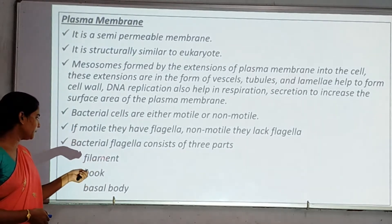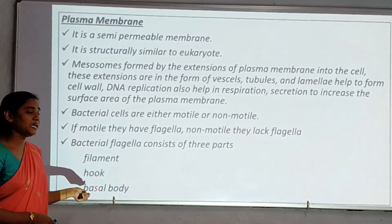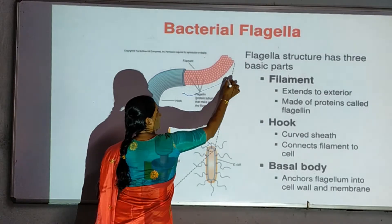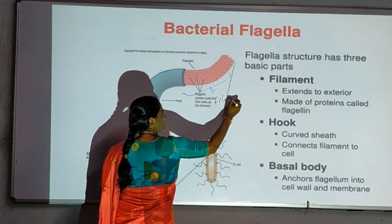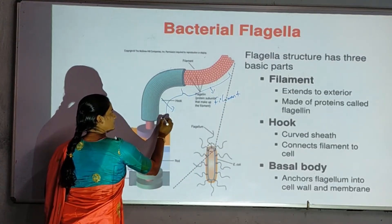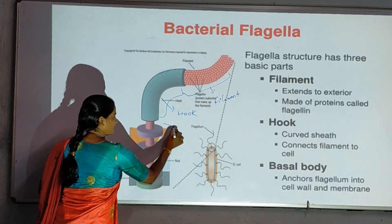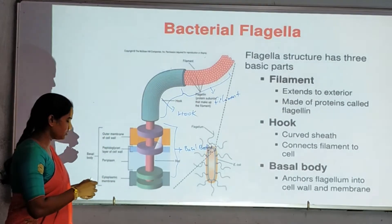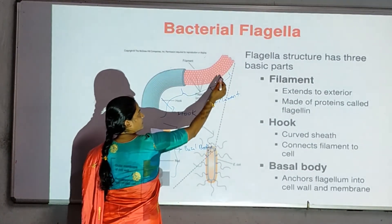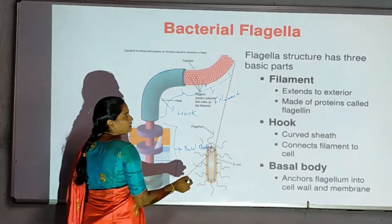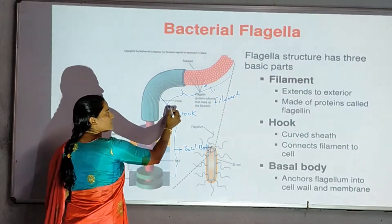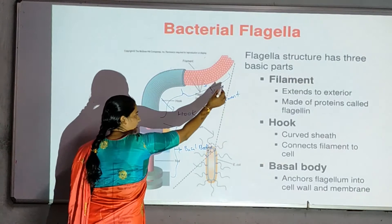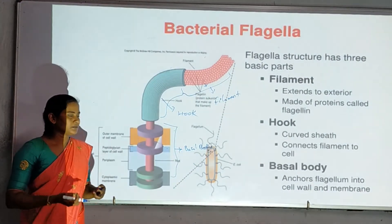The flagella body remains in three parts. First one is the filament. Second is the hook. Third is the basal body. Here are the three parts of the flagella body. The filament is the exterior and external body. This is made up of proteins.